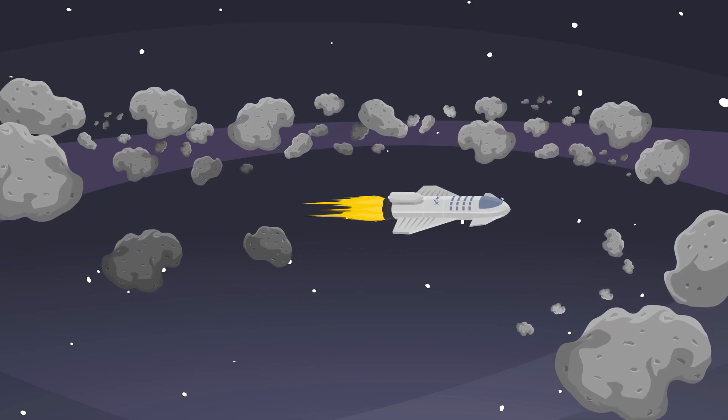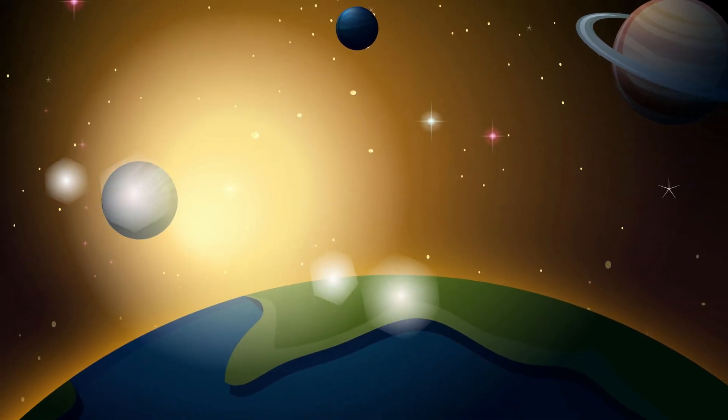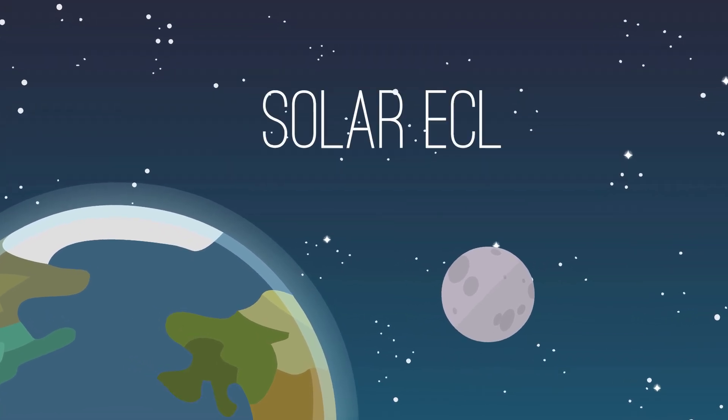Our story begins in the vast reaches of outer space, where the sun shines brightly, providing us with warmth and light. Every once in a while, something extraordinary happens, a solar eclipse.